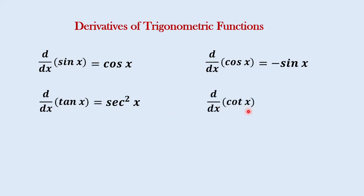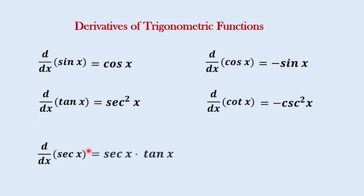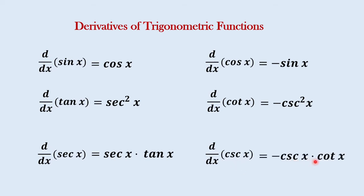For cotangent of x, that would be negative cosecant squared x. For the derivative of secant x, we have secant x times tangent of x. And for the derivative of cosecant of x, we have negative cosecant of x times the cotangent of x.